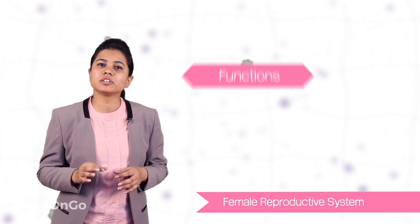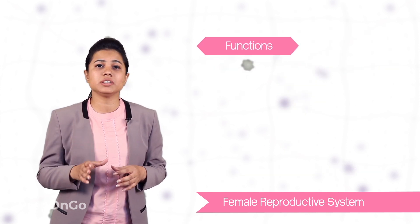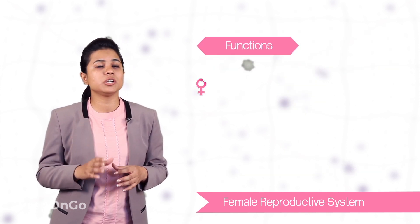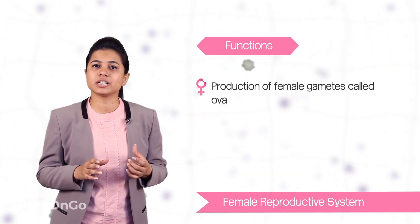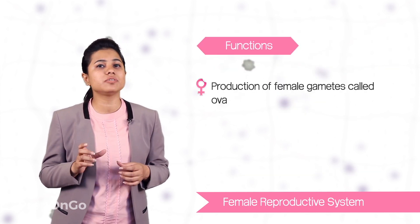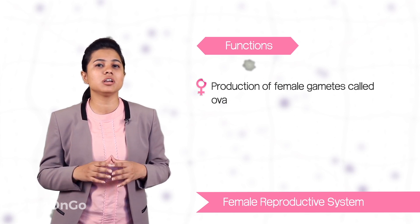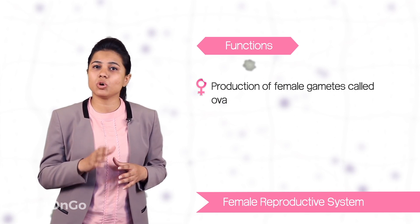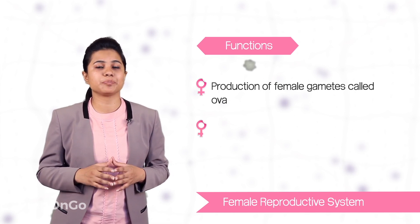The main function of ovaries is to produce the female sex cells or the female gametes, called as ova or egg.